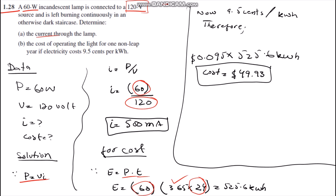We know that the cost of electricity is 9.5 cents per kilowatt-hour, as given in the problem. We multiply 0.095 by 525.6 kilowatt-hours, converting cents into dollars. Therefore, the cost of electricity for the incandescent bulb is $49.93. Thanks for watching.